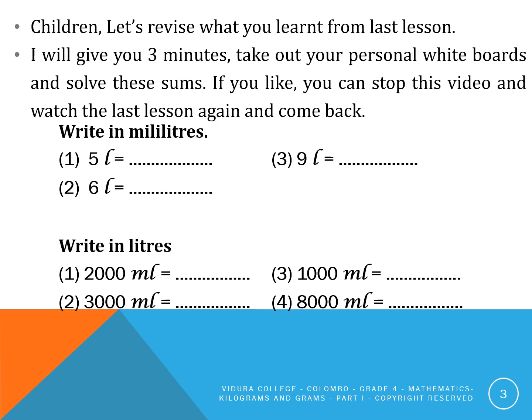Write in milliliters. First one: 5 liters. Second one: 6 liters. Third one: 9 liters. Write in liters. First one: 2,000 milliliters. Second one: 3,000 milliliters. Third one: 1,000 milliliters. Fourth one: 8,000 milliliters.